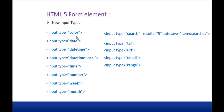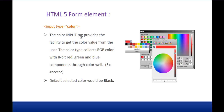The first input type is color. The color input tag provides the facility to get the color value from the user. The color type gets an RGB color with 8-bit red, green, and blue components through a color well. By default, the selected color will be black.